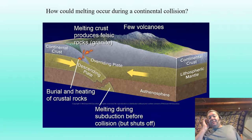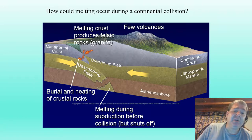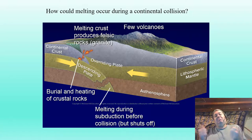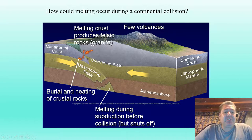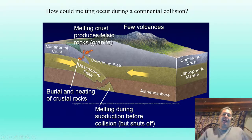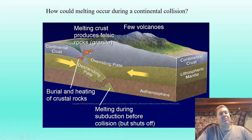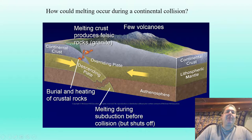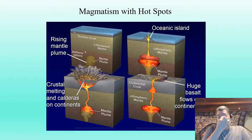Melting can also occur at a continental-continental collision. Once you go past the point of metamorphism you can re-melt some of those rocks. Even with continental collisions, you might not get many volcanoes — maybe just very sporadic ones — but some magma can form due to intense pressure and heat.